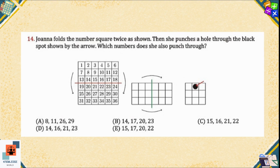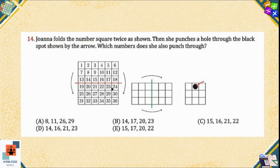Question 14: Joanna folds a number square twice as shown, then she punches a hole through the black spot shown by the marker. Which number does she also punch through? Here you can see she folded the paper once along a straight line, and after that she folded it again. The green line is shown to highlight the second fold. After that, she punched the middle of the first row.